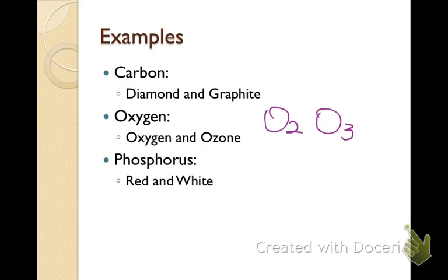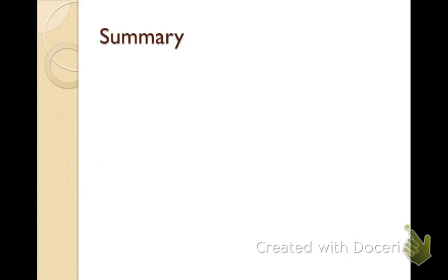That red tip is actually red phosphorus, and it's able to ignite very quickly. So just to recap: allotropes are the same elements with the same isotopes, but they have a different structure, and because they have a different structure, they have different physical properties as well. Have a great day.